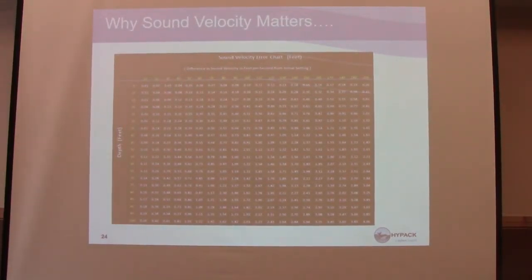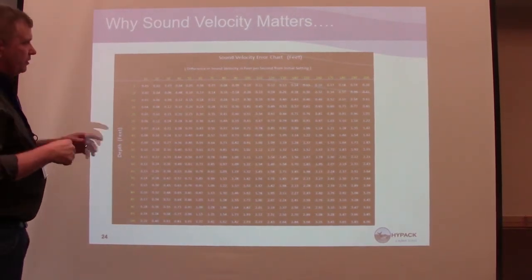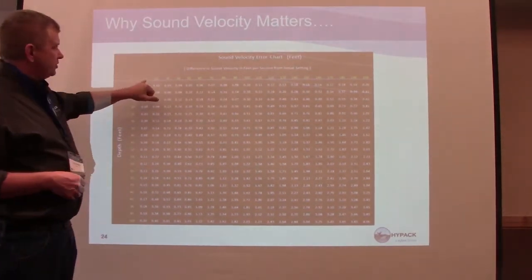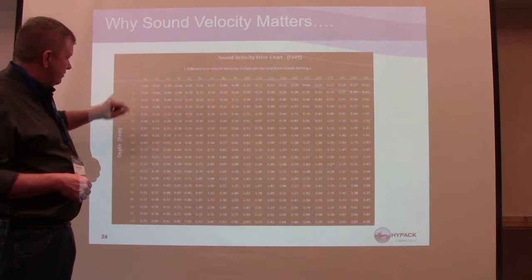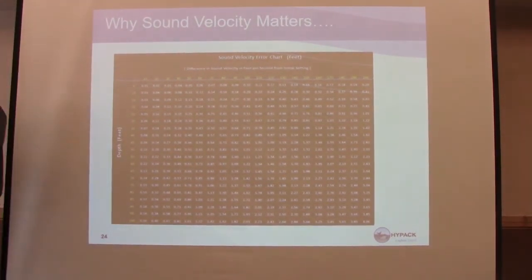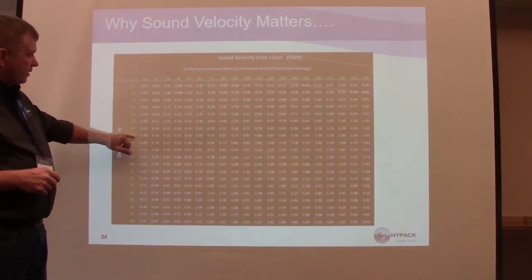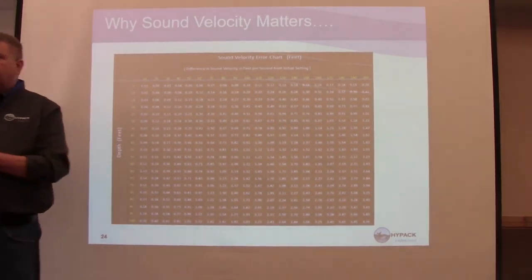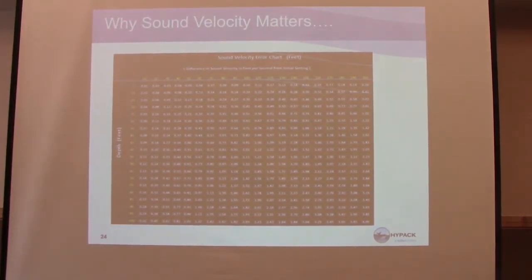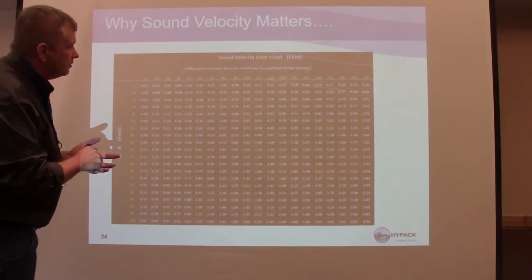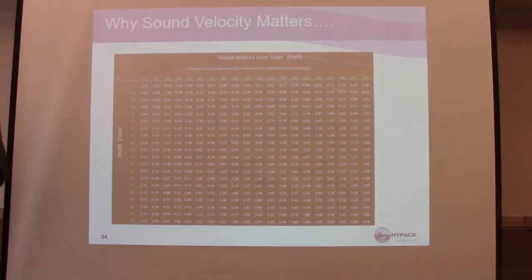Why sound velocity matters: where there's a change in sound velocity, you start to see a difference in the depth readings. At 50 feet, a difference of 10 in sound velocity is a tenth of a foot off in your soundings. How many people survey in greater than 30 feet of water? If you're in 40 feet of water and off by 50 feet per second in sound velocity, that's four tenths of a foot error. Sound velocity is really important.